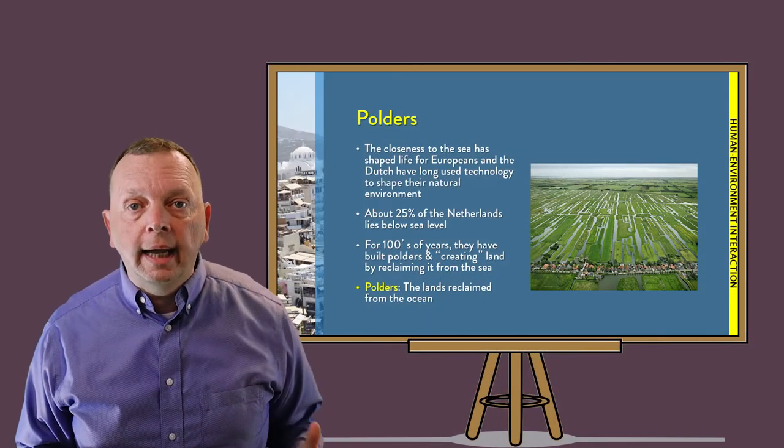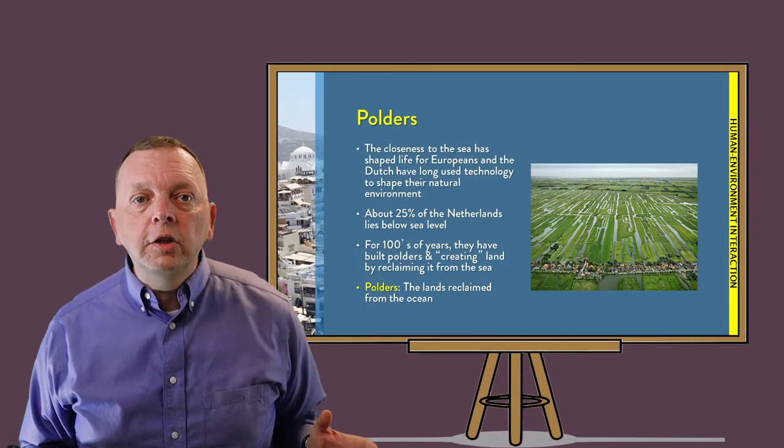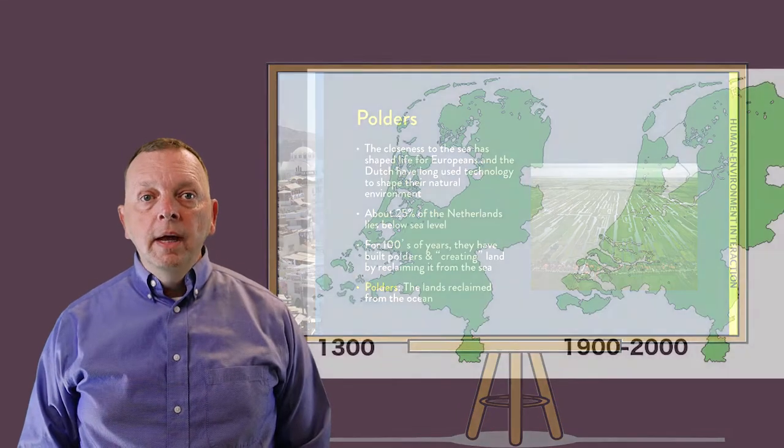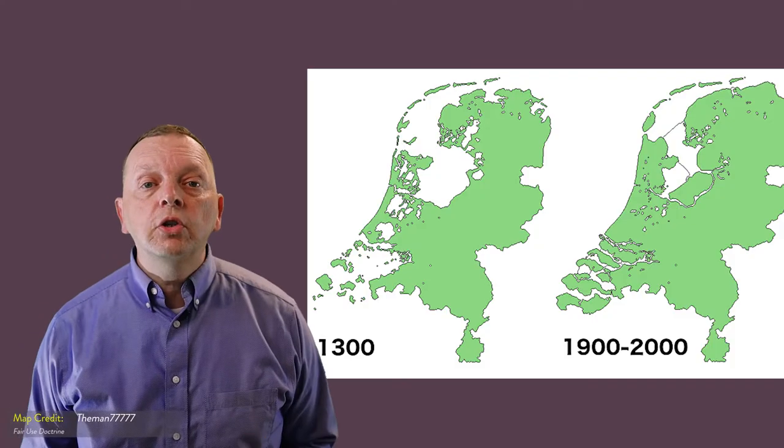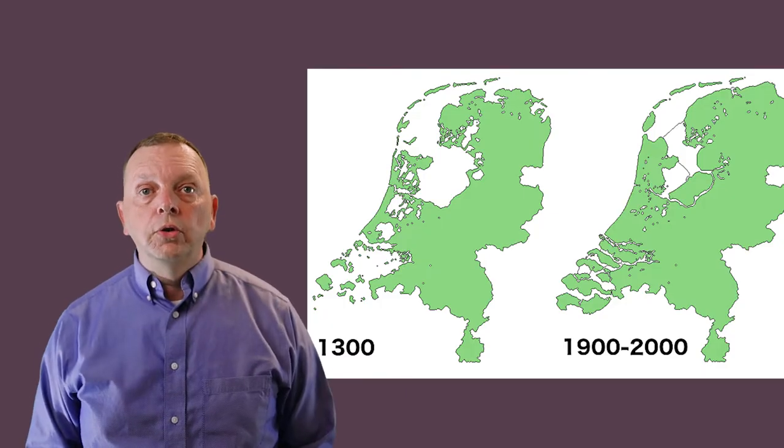For hundreds of years, the Dutch have actually been reclaiming land from the sea — literally making more land out of what used to be sea. They do this through what they call the polders. The first step is building a dam, then pumping out the water from the area being reclaimed. They then plant plants that absorb the salt out of the ground. After five years of letting the plants leach the salt out of the soil, the land is ready to be used. Today, one-sixth of the Netherlands is land reclaimed from the sea.